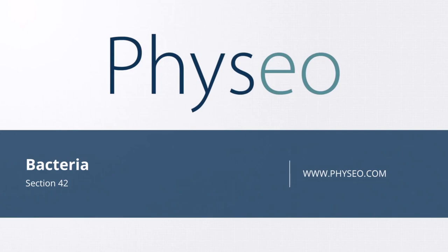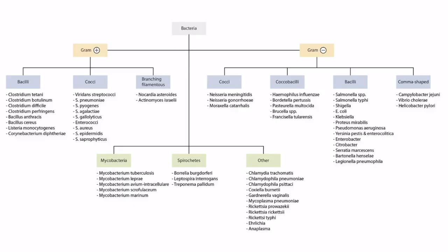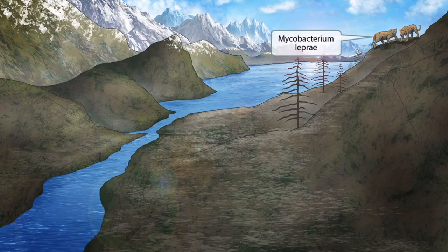Welcome to section 42 of Bacteria. This is our bacteria overview figure. We'll be discussing Mycobacterium leprae, which you can see right here. This scene takes place in the wild where we can see some leopards up on a hill. Leopard sounds like leprae, so these leopards should help you remember that this image is all about Mycobacterium leprae.